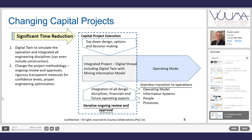We need to change the way we do capital projects. This linear process of a concept study, then pre-feasibility, then a feasibility study with linear stage gates needs to be re-examined. A digital twin will let us integrate all the engineering disciplines, allow for an iterative ongoing review process, and let you make a decision about the project at any point in time. Importantly, that digital twin can become the operating model of the final mine, seamlessly moving into operational mode rather than leaving the 3D model in the hands of the EPCM.